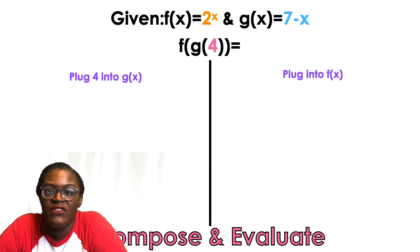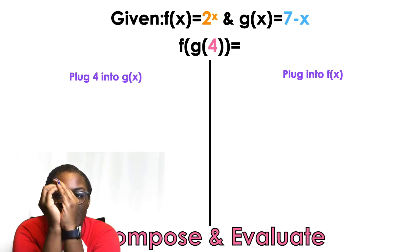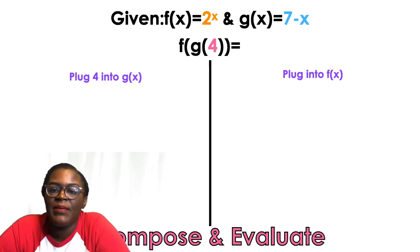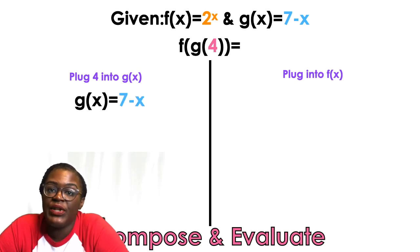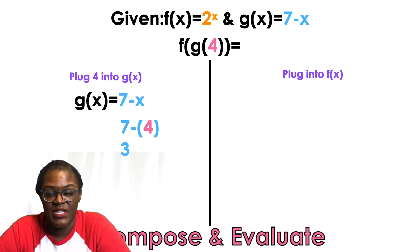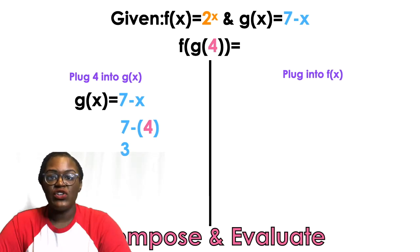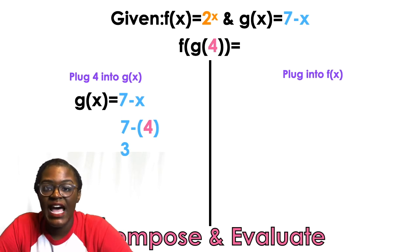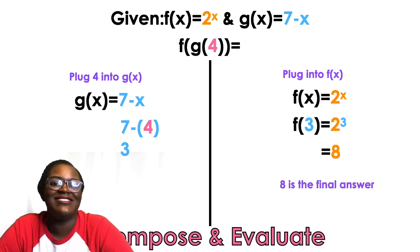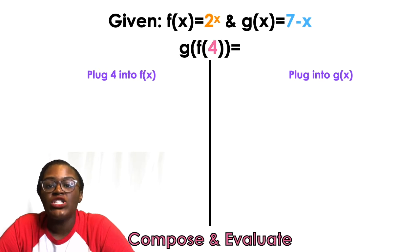First, start in the innermost parentheses where the 4 is — plug 4 into G. G is 7 minus x, so we get 7 minus 4, which equals 3. Now plug that result into F. F is 2 to the power of x, so 2 to the power of 3 is 8. That's the final answer.